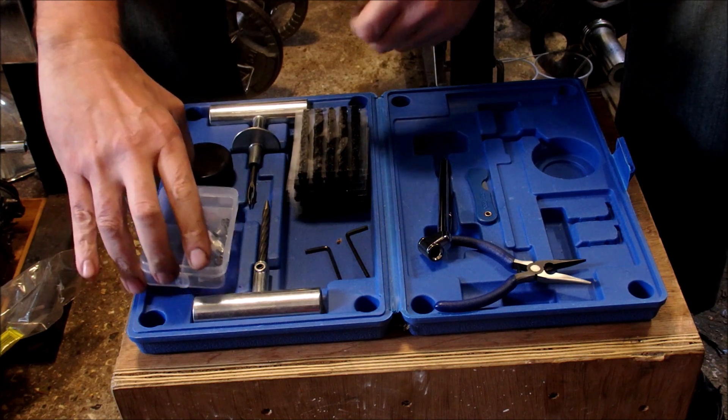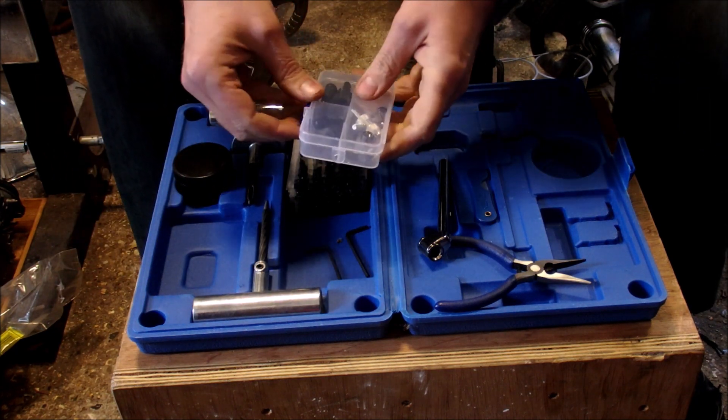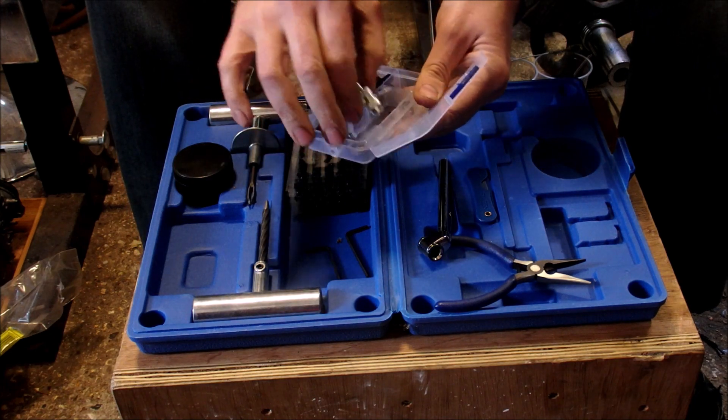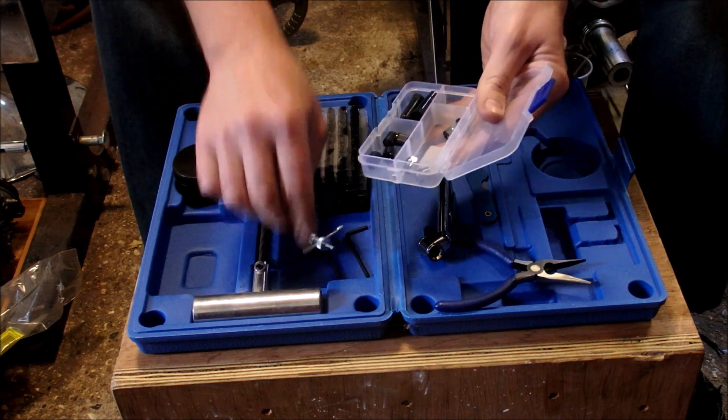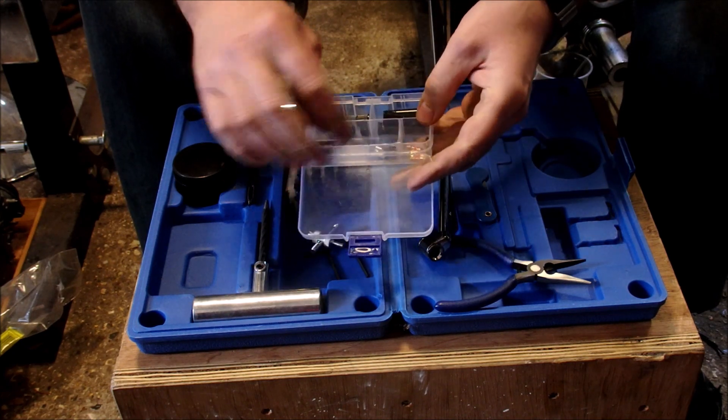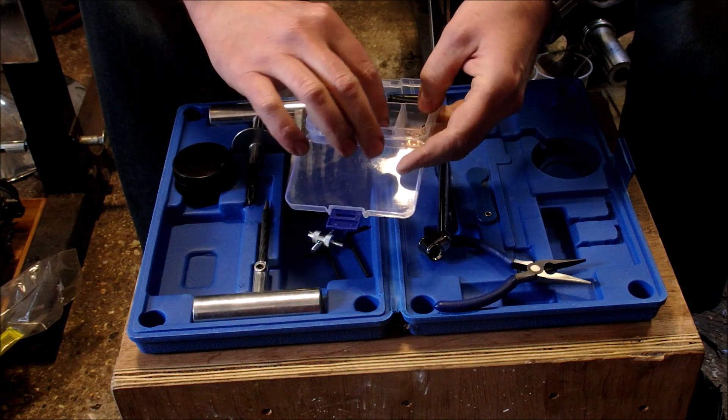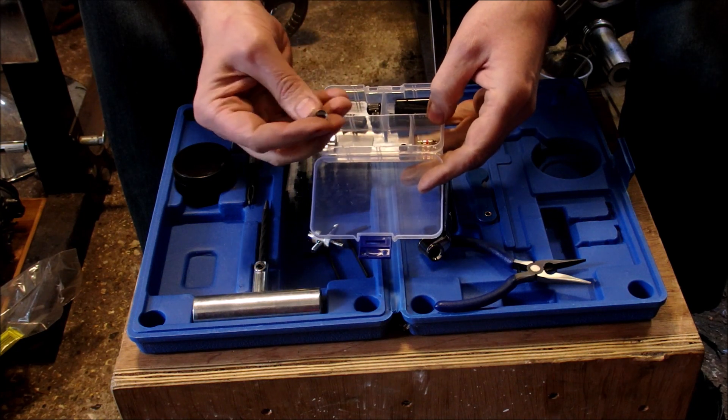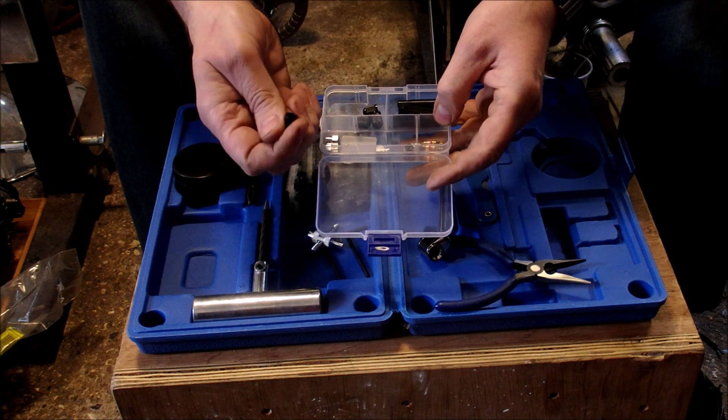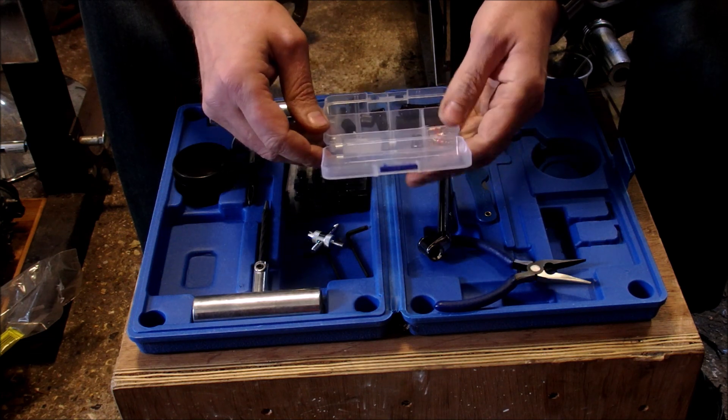The next thing you get is a small storage Tupperware box. And I thought this was quite a nice touch. You obviously get your valve tool. You also get four spare valve stems in there, which I thought was quite a nice touch. You get eight dust caps. You get four in chrome, which I thought was quite nice.